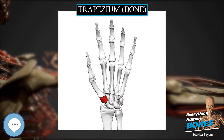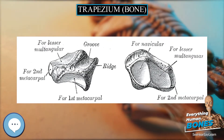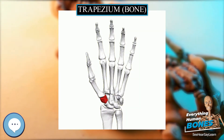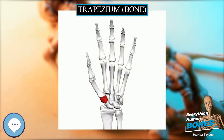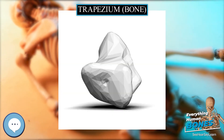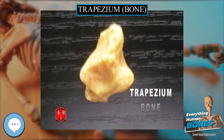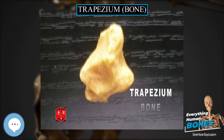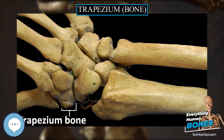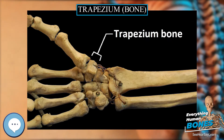The trapezium bone, also called the greater multangular bone, is a carpal bone in the hand. It forms the radial border of the carpal tunnel structure. The trapezium is distinguished by a deep groove on its anterior surface. It is situated at the radial side of the carpus between the scaphoid and the first metacarpal bone — the metacarpal bone of the thumb. It is homologous with the first distal carpal of reptiles and amphibians.